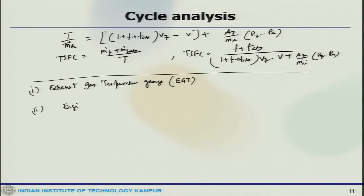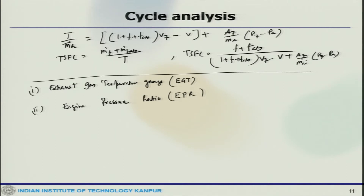Second is Engine Pressure Ratio, EPR. EPR is the ratio of turbine discharge to compressor inlet pressure, and is used as an indication of the amount of thrust being developed by a turbine engine. EPR gauges indicate the power output of turbojet and turbofan engines; pressure measurements are recorded by probes installed in the engine inlet and exhaust. EPR system designs automatically compensate for the effects of airspeed and altitude, and corrections for changes in ambient temperature can also be applied.